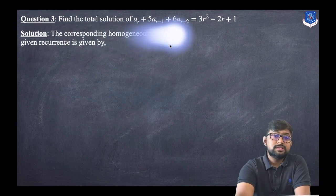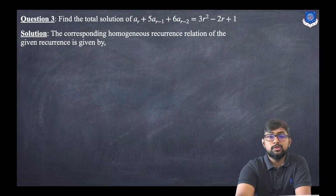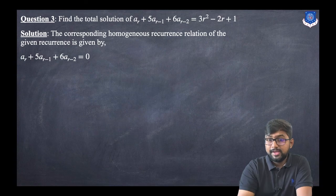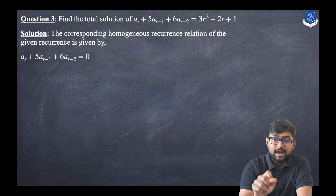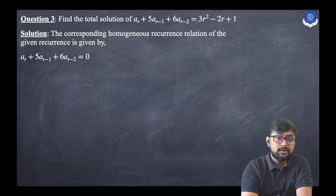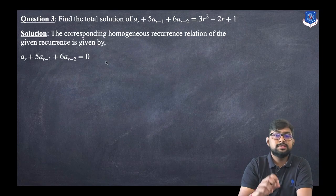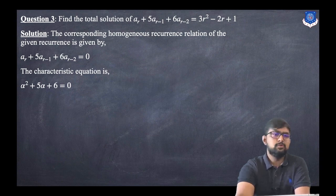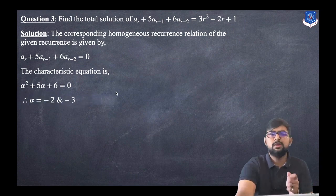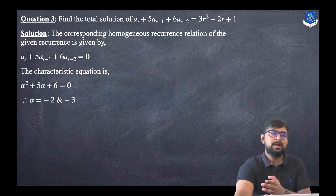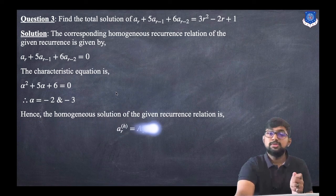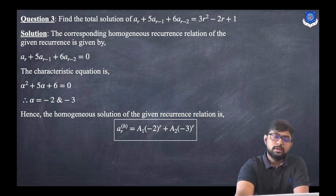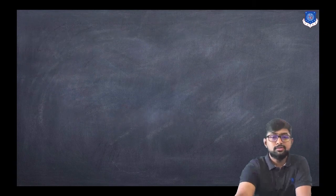The homogeneous equation is a(r) + 5·a(r−1) + 6·a(r−2) = 0. The order is 2, so the characteristic equation is α² + 5α + 6 = 0. The roots are α = −2 and α = −3. Since the roots are distinct, a(r)_h = a1·(−2)^r + a2·(−3)^r. Now we proceed for the particular solution.